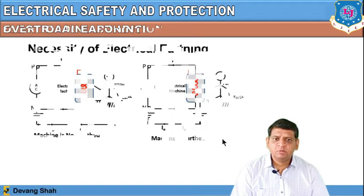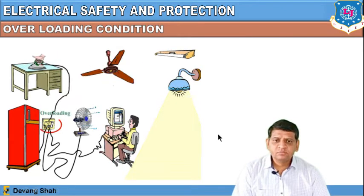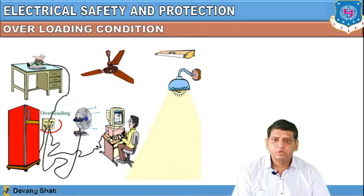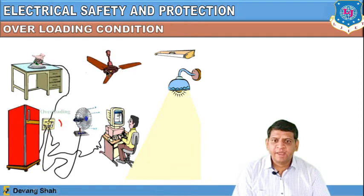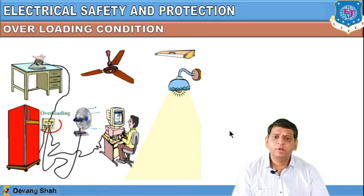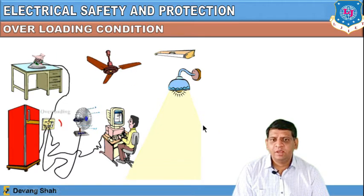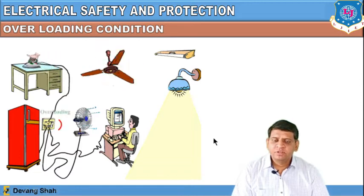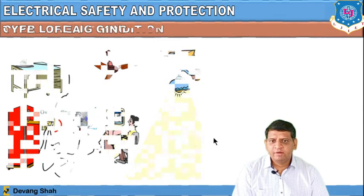Earthing is also required for the overloading condition. At home, if you are using an iron, a refrigerator, a fan, and other devices all at the same time on the same switchboard, and earthing is not properly provided, the heavy current passing through all these devices may damage them. If earthing is properly provided, all home appliances can be protected.